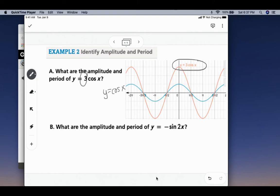You can see on our graph that it goes up to positive 3 and down to negative 3. So the amplitude would be 3, and the period is still 2 pi. It does not change the period by putting that 3 in front of cosine.